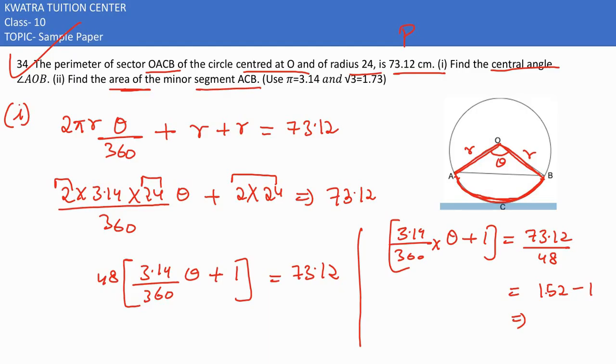If we take plus 1 to the other side, it becomes minus 1. So 1.52 minus 1 is 0.52.